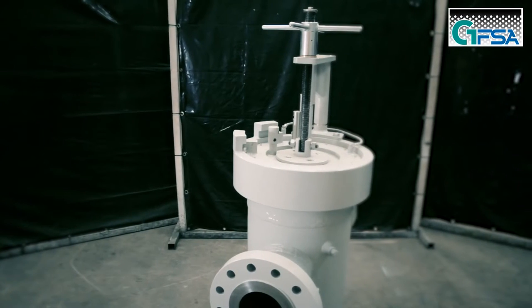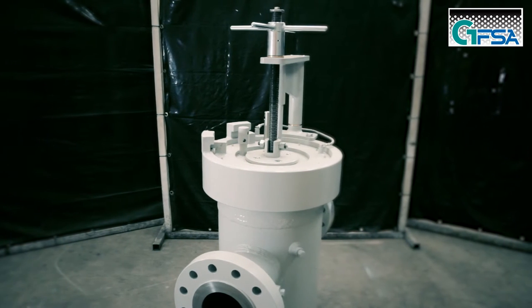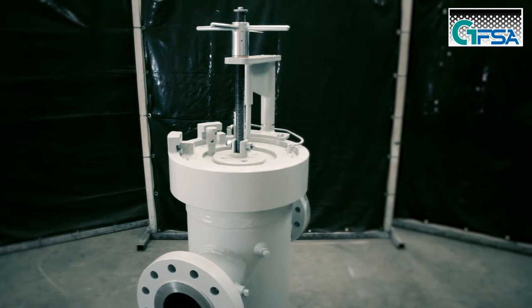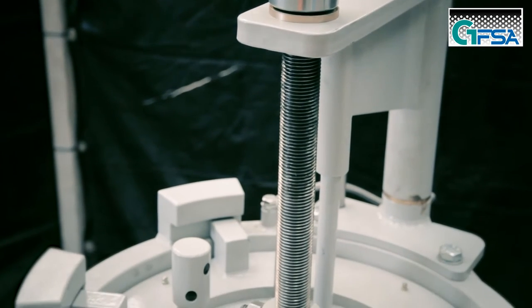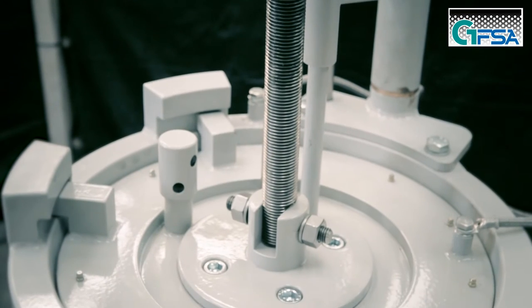Before attempting to open any closure door, it is essential that the vessel and adjoining process lines are depressurized, and that the vessel and pipeline are drained of processed gas or liquid and purged if necessary.